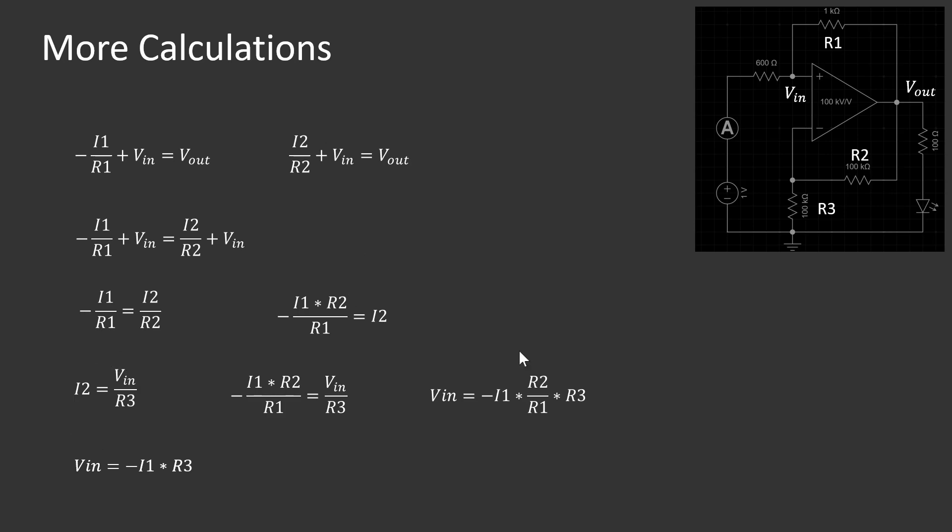Then finally, we bring back our third element of the equation for this resistor over here, I2 equals V_in by R3, which we can then factor in this element, so we cancel out I2, and we get minus I1 times R2 by R1 from here, equals V_in by R3 from here. Then we want to put V_in on one side to make it simpler, so we end up with V_in equals minus I1 times R2 over R1 times R3.